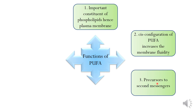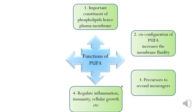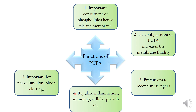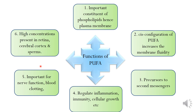They are precursors to second messengers. They regulate inflammation, immunity, cell growth, etc. They are important for nerve functions and blood clotting. High concentrations of PUFA are found in the retina, cerebral cortex, and sperms.